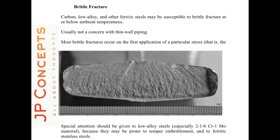The morphology of brittle fracture can be seen in the picture. Carbon, low alloy, and other ferritic steels may be susceptible to brittle fracture. It is usually not a concern with thin-wall piping. Most brittle fractures occur on the first application of a particular stress. Special attention should be given to low alloy steels.